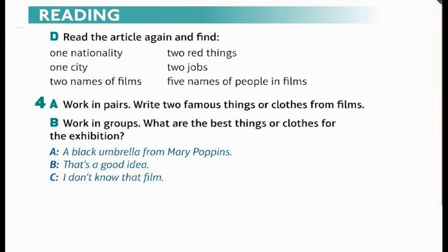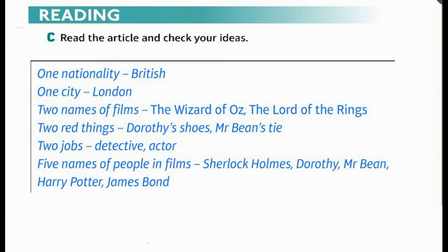Read the article again and find: one nationality, two red things, one city, two jobs, two names of films, five names of people in films. Answers: one nationality — British; one city — London; two names of films — The Wizard of Oz, The Lord of the Rings; two red things — Dorothy's shoes, Mr Bean's tie; two jobs — detective, actor; five names of people in films — Sherlock Holmes, Dorothy, Mr Bean, Harry Potter, James Bond.